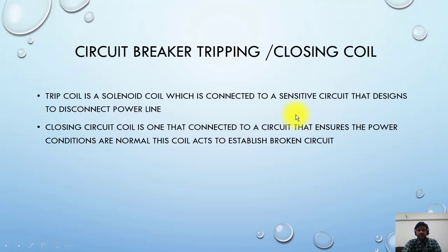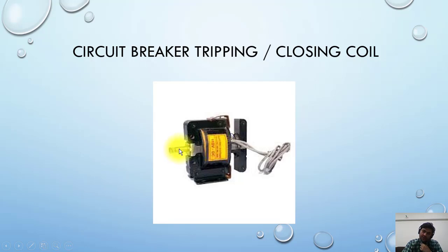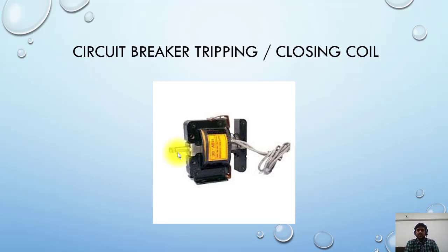This is a picture of the tripping coil. Basically it is a solenoid, and there is a small mechanical part — a plunger — that will hit the mechanism and release the breaker into either an open position or a closed position.